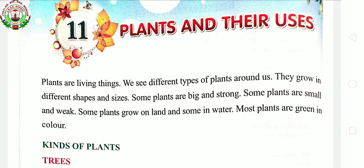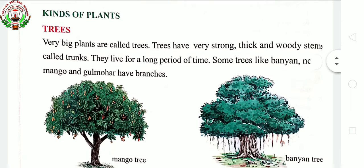In the previous class, we came to know about plants. Plants are also living things just like us. There can be seen different types of plants around us — they have different shapes and sizes. Plants give us food, shelter, clothes, and raw materials. There can be seen plants mostly in green color.